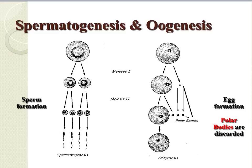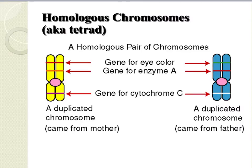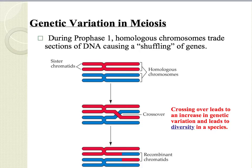Notice that in spermatogenesis, we end up with four viable sperms. In oogenesis, only one out of the four cells will become the egg — the other three are called polar bodies and are later discarded by the body. Homologous chromosomes are a pair of chromosomes where one has been inherited from the mother and the other from the father. During prophase I, homologous chromosomes trade sections of DNA, causing a shuffling of genes. Crossing over leads to an increase in genetic variation and leads to diversity in a species.